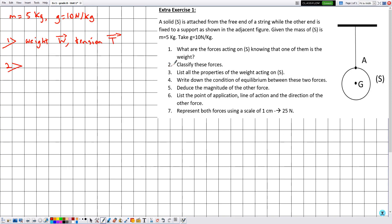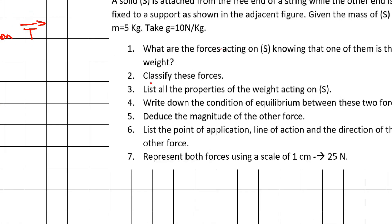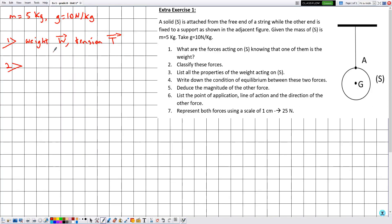In number two, they ask us to classify these forces. By classify, we need to mention whether each force is an action-at-a-distance force or a contact force. The only three forces that act at a distance are weight, magnetic, and electric. Therefore, weight W is classified as an action-at-a-distance force, and because tension T is neither magnetic, nor electric, nor weight, it is classified as a contact force.